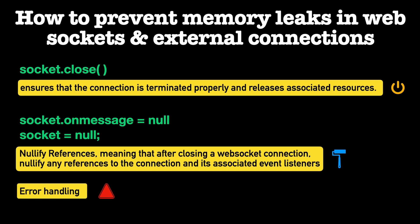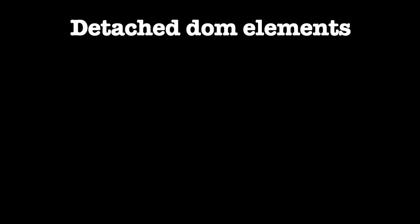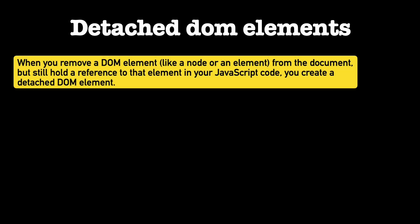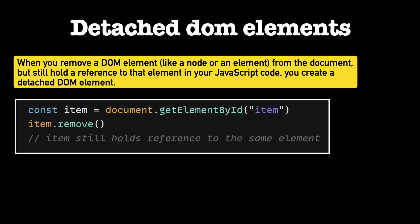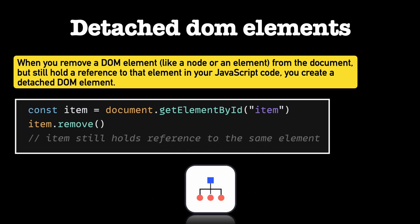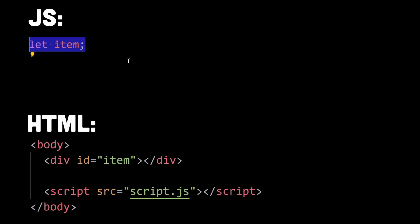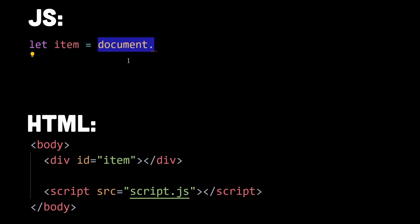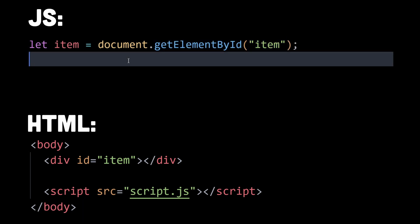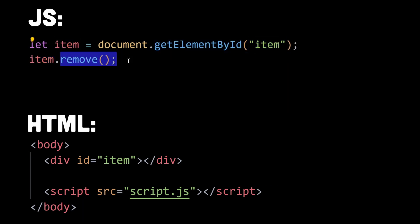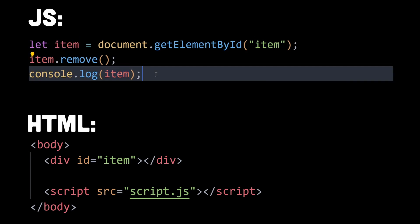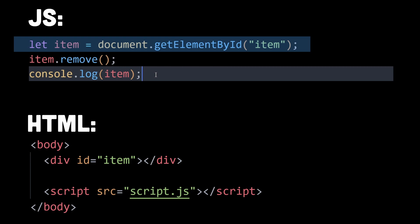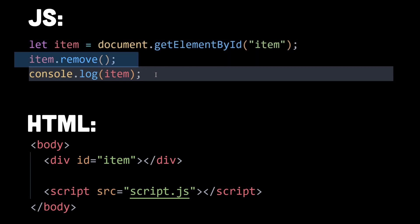Number six, the last one, is detached DOM elements. When you remove a DOM element from the document but still hold a reference to that element in your JavaScript code, you create a detached DOM element. These detached DOM elements are no longer part of the visible document but continue to exist in memory because your JavaScript code maintains a reference to them. As a result, these elements cannot be garbage collected, leading to memory leaks.